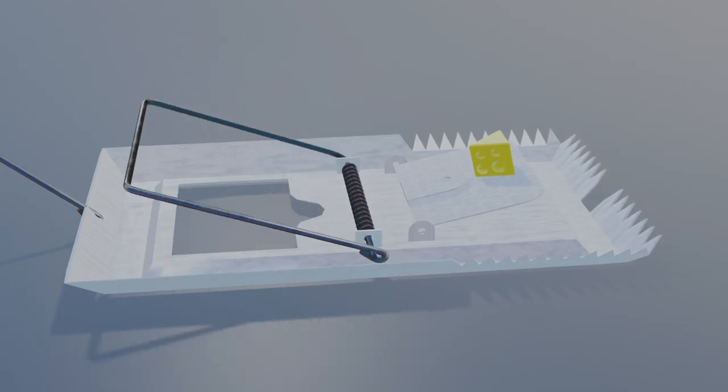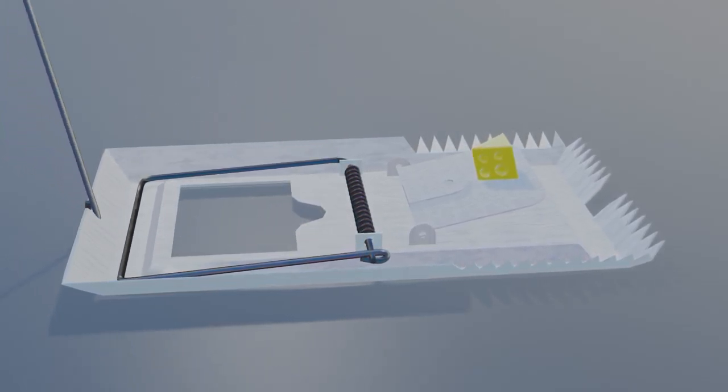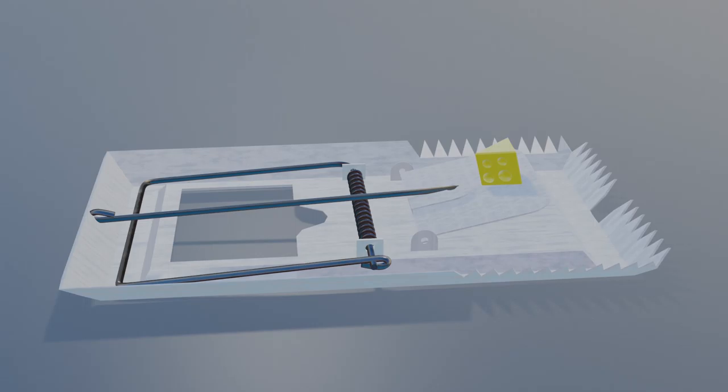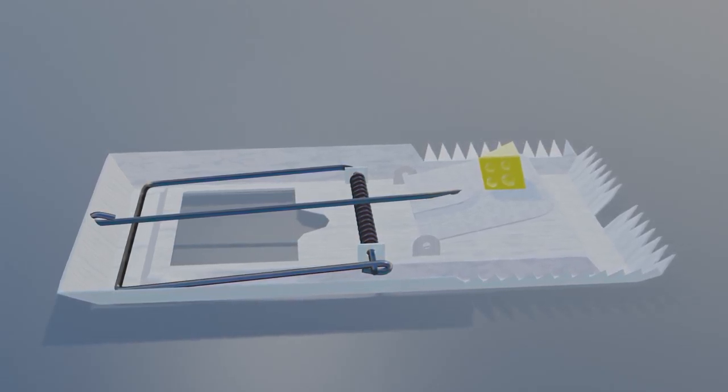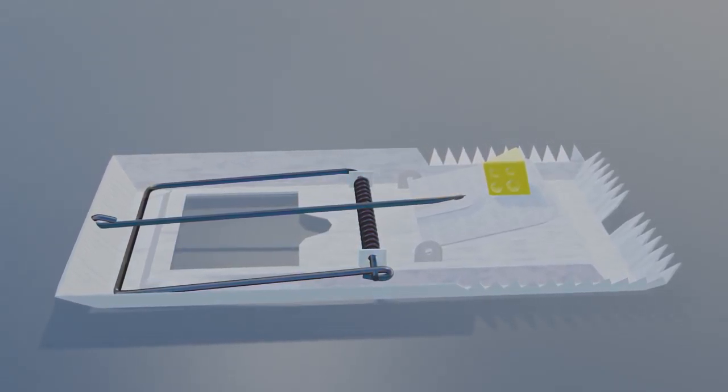Load the spring by pulling it to the other side. Pass the holding bar over the hammer and attach it to the catch. Now the trap is loaded and ready to be placed somewhere.